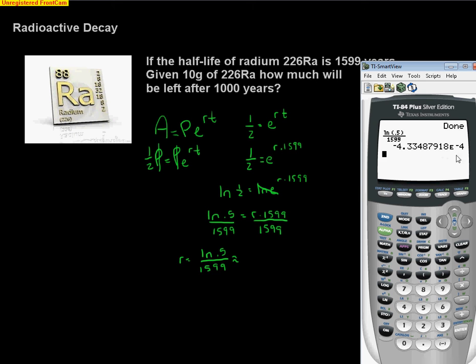We get this as a rate. That's scientific notation there, so move that decimal point four places to the left. That's negative 4.334 times 10 to the negative fourth.